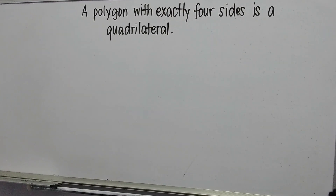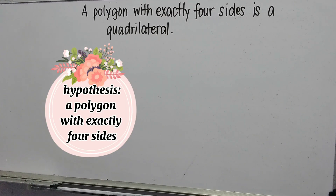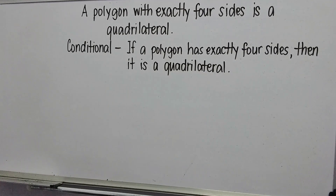Now, let us go to the second example. In this sentence, it is not written in the if-then form. As I've said before, some conditional statements are not written in the if-then form, but you can still identify the hypothesis and conclusion. Let us try to identify them and write it in conditional form. The hypothesis is: a polygon with exactly four sides. The conclusion is: it is a quadrilateral. Our conditional statement: if a polygon has exactly four sides, then it is a quadrilateral.